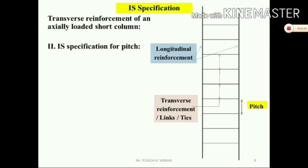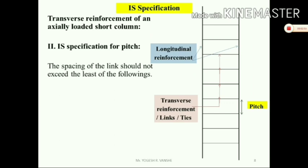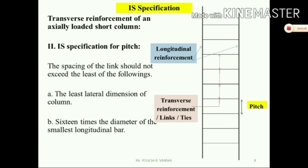For the spacing of links and ties, three conditions apply. The first condition is the least lateral dimension of the column. The second condition is 16 times the diameter of the smallest longitudinal bar. The third condition is 300 mm center to center. The minimum of these three values governs the spacing of the transverse reinforcement.